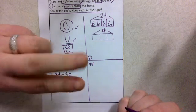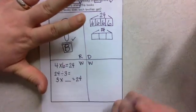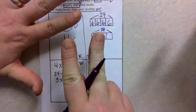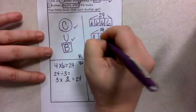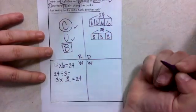Well, 3, 6, 9, 12, 15, 18, 21, 24. It's 8. So that means that each brother would get 8 books.